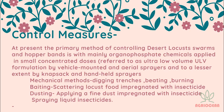Another method involves scattering locust bait — food impregnated with insecticide — so locusts feed on it and are killed. Dusting with liquid insecticide is also used. These control measures in combination can be used to handle the invasion, though it remains a massive challenge.